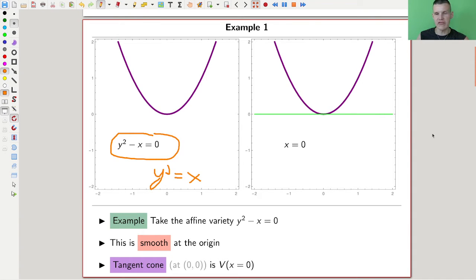This is very nice - it's smooth at the origin. The tangent cone is actually really a tangent and it's just given by setting x to zero, just a variety. The tangent is again a variety and it's obtained by setting x to zero.